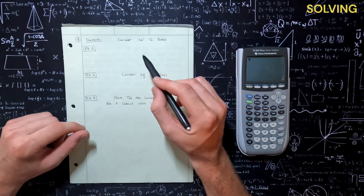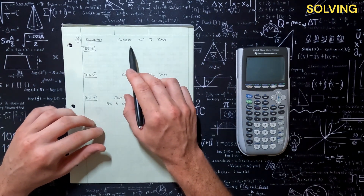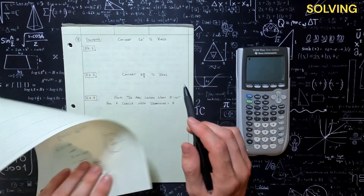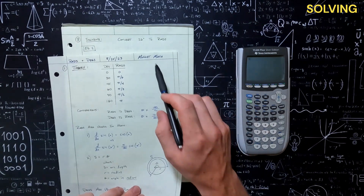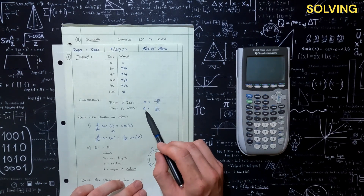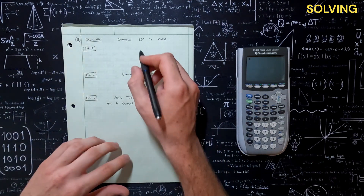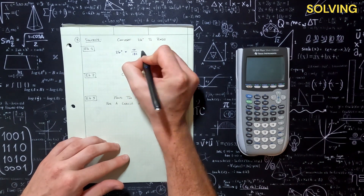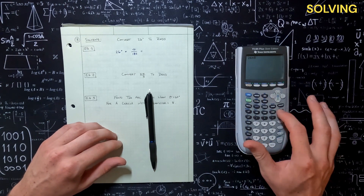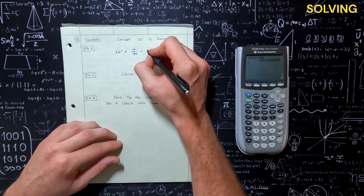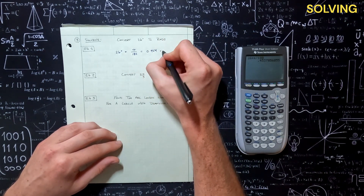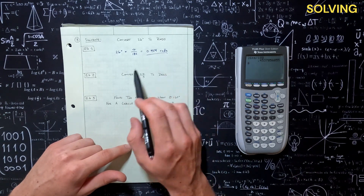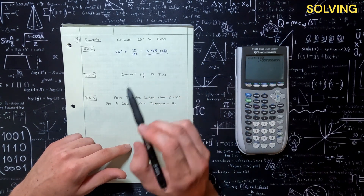Moving on to solving together. Example 1: we want to convert 26 degrees to radians. We have an angle theta given in degrees and we want to convert to radians, so we're going to take that theta and multiply it by pi over 180. We take 26 degrees times pi over 180, and that gives us 0.454 radians.